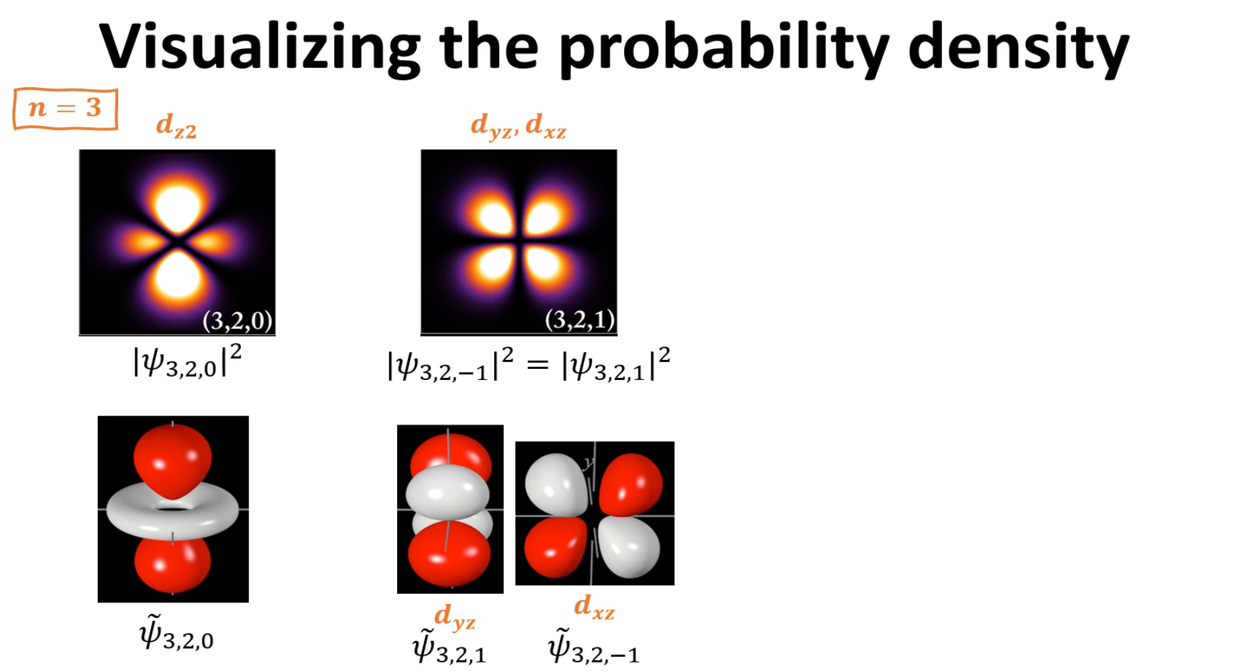For the m equals plus and minus 1 d orbitals, the real orbitals consists of 4 lobes, residing on the yz plane or the xz plane. Thus, the former is called the dyz orbital, and the latter the dxz orbital.